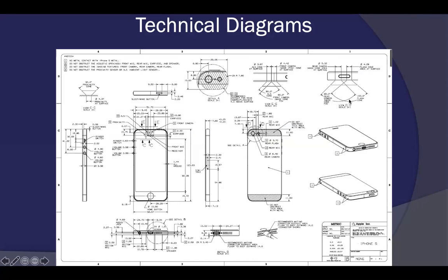If you want to look at the standard symbols used in technical drawings — showing motion, links, and the kind of gears an object might have — you are to go to page 384.